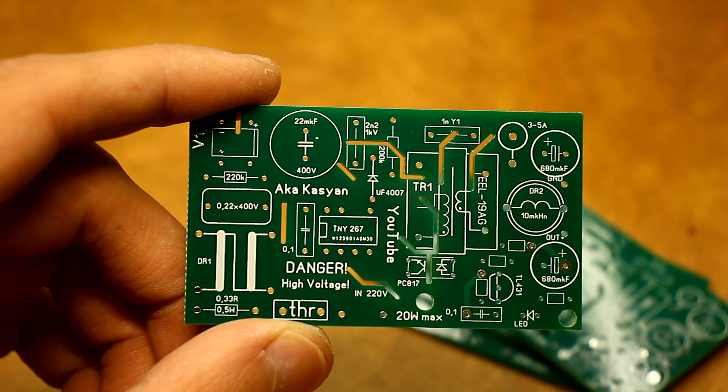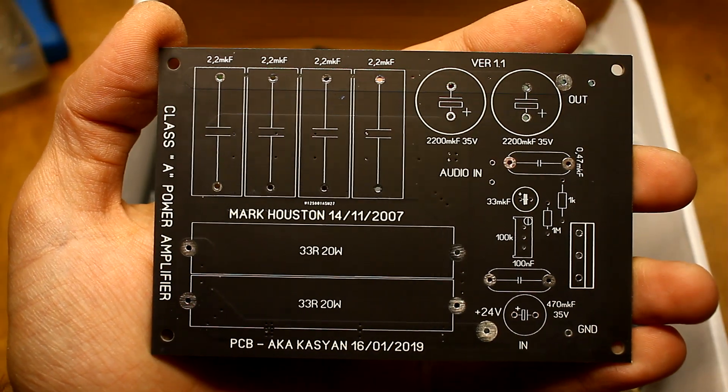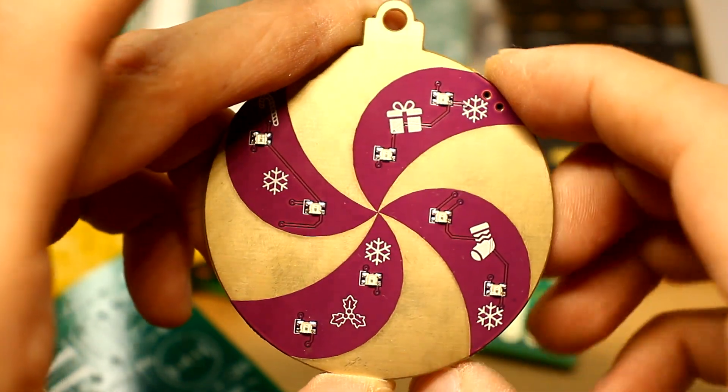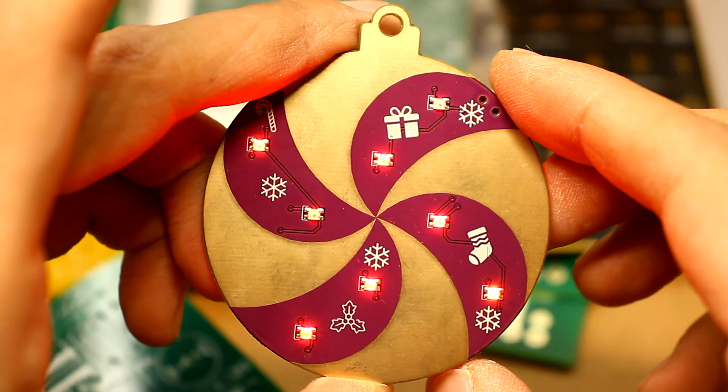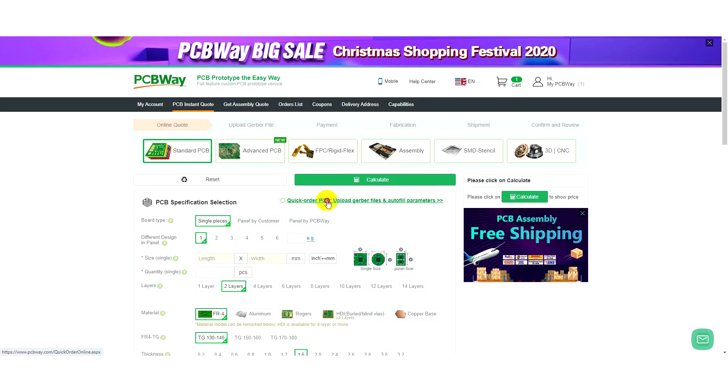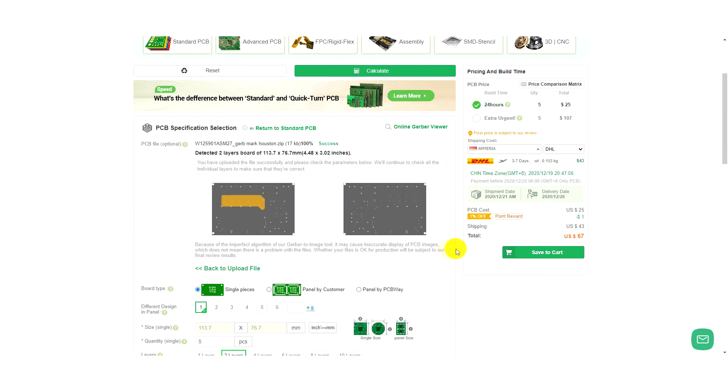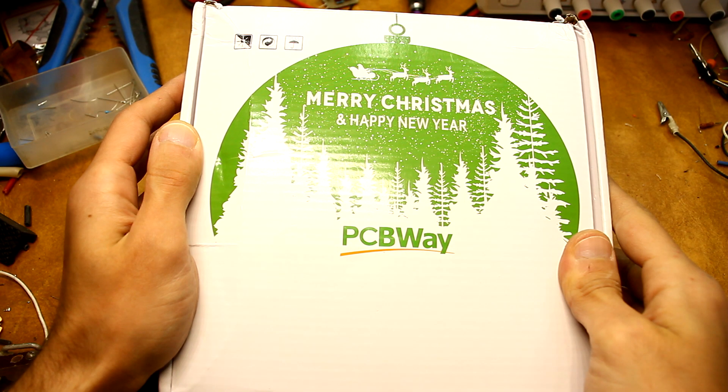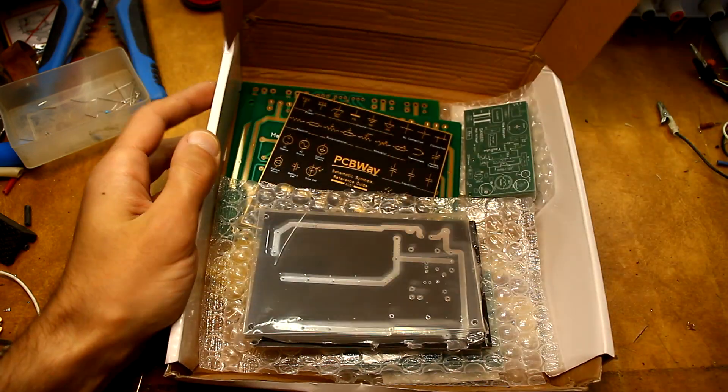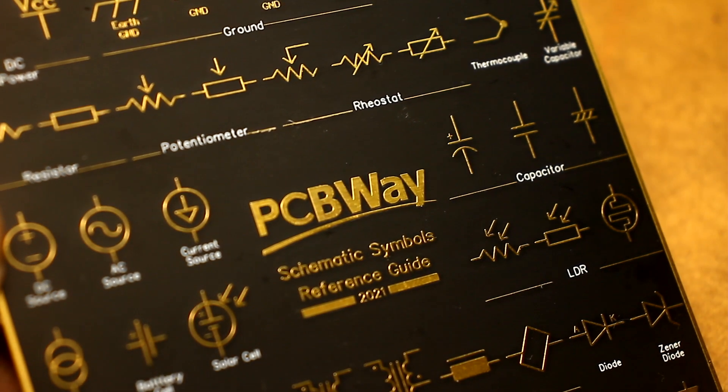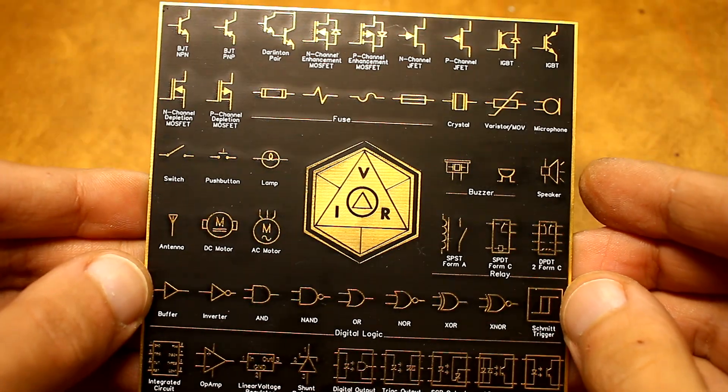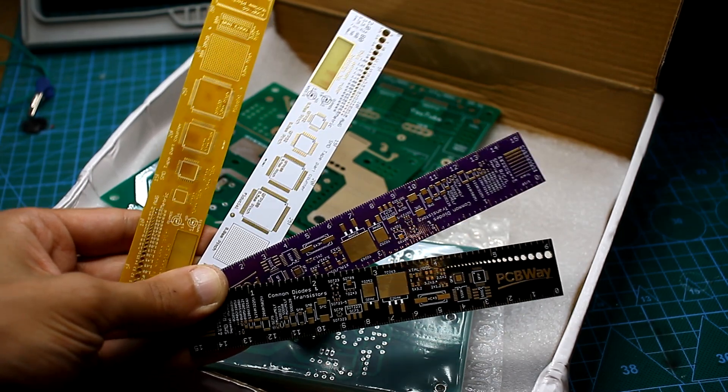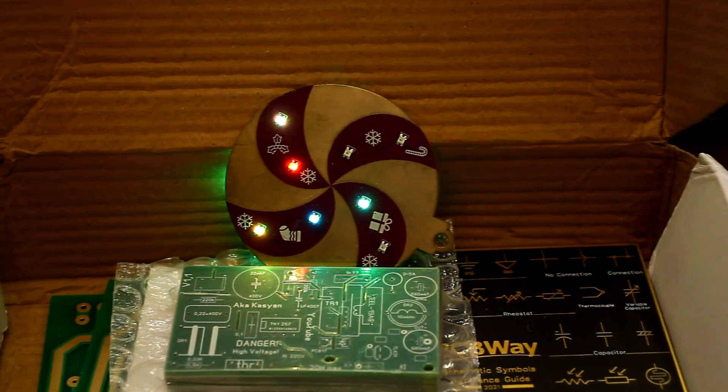Do you want your homemade products to be the same as the factory ones? Then you need high-quality printed circuit boards, which PCBWay will produce for you at affordable prices. Just download the source Gerber files from the company's website, select the options you need, pay for the order, and soon your boards will be ready. The complexity, number of layers, and board sizes can be anything. PCBWay often holds contests and sweepstakes. Follow the news to keep track of the events. We were personally convinced of the quality. Try it too. The link is in the description.